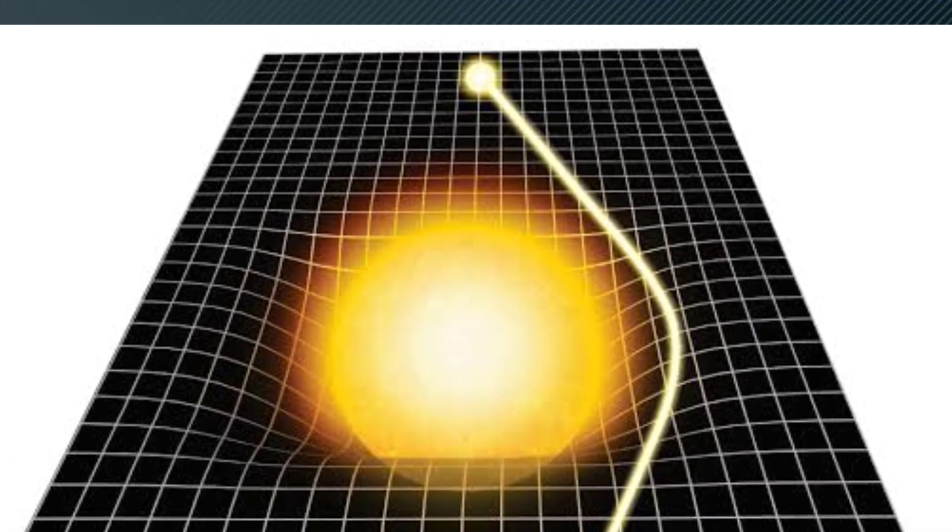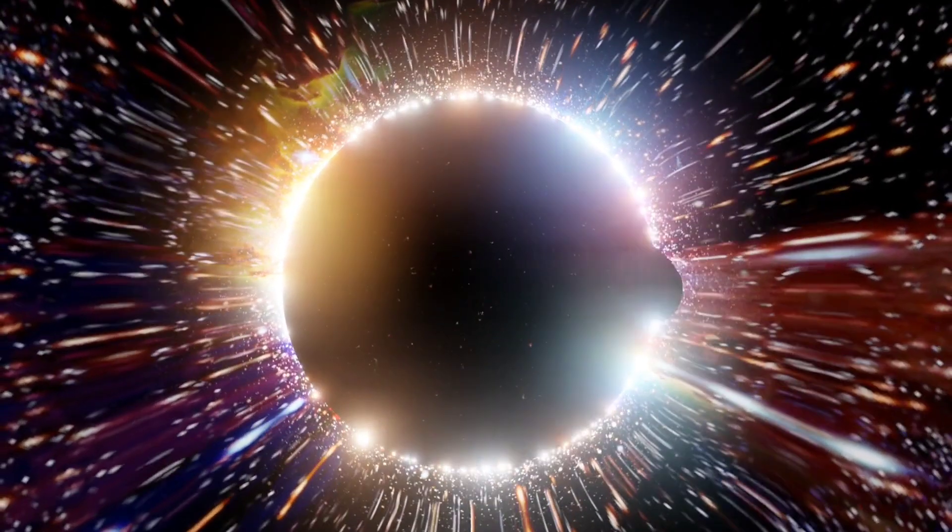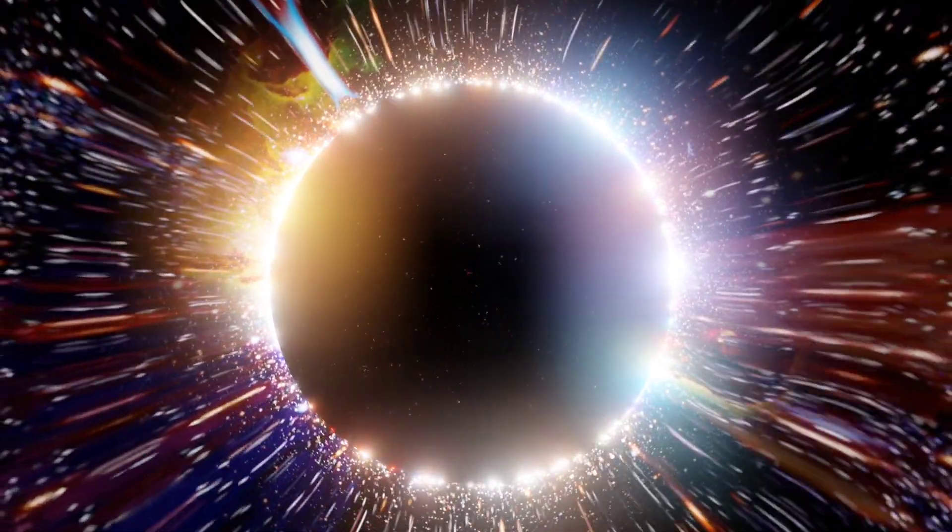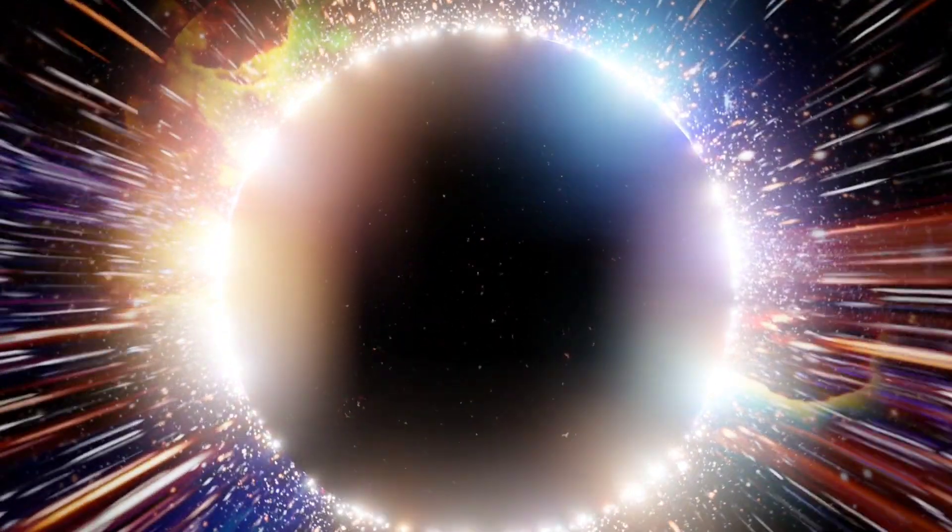Massive objects like planets and stars create depressions or wells in this fabric, causing other objects to move along curved paths. Light, while massless, also follows these curved paths due to the warping of spacetime.